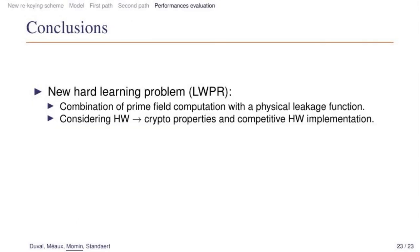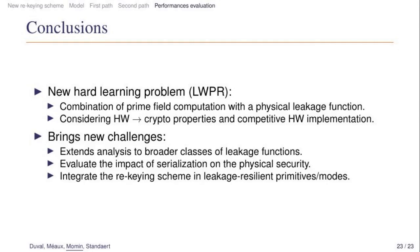As a conclusion, we propose in this work a new rekeying scheme based on a new learning problem, the learning with physical rounding problem. It consists of a combination of an inner product over a prime field and a physical leakage function performed by the implementation leakage, and not explicitly as done in the weak PRF of the dark matter work. Considering the Hamming weight leakage function as a first analysis step, the rekeying function proposed ensures relevant cryptographic properties and allows competitive implementation in hardware. The evaluation of the proposal with more general leakage functions is a natural next step. And another open question is the practical impact of serialization on the physical security. Such serialization could be, for example, found in software implementations. Finally, a research direction could be to check whether integrating such a rekeying scheme in a more general LWR primitive or mode is feasible.